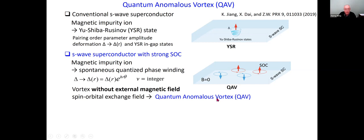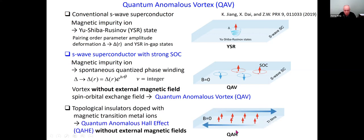It is, formally speaking, a superconducting analog of the quantum anomalous Hall effect, in which you take a topological insulator thin film, dope with magnetic ions, and produce a quantum anomalous Hall state without an external magnetic field. The quantum anomalous vortex per se has nothing to do with Majorana zero modes; however, it came to light because of the search for Majorana zero modes in iron-based superconductors.